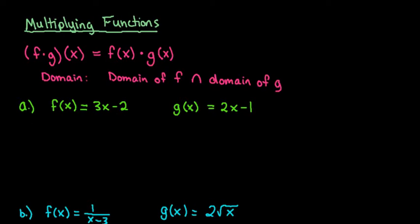So let's look at a couple of examples. Our first example that we're going to find is f times g of x where f of x is 3x minus 2 and g of x is 2x minus 1.